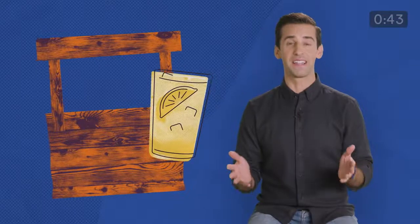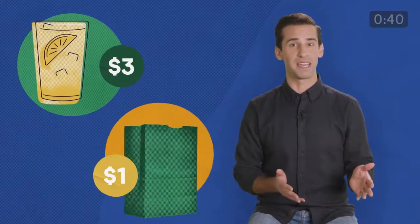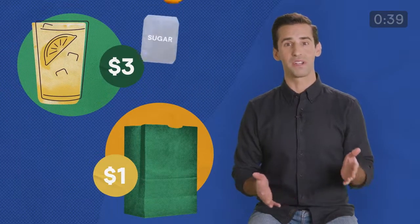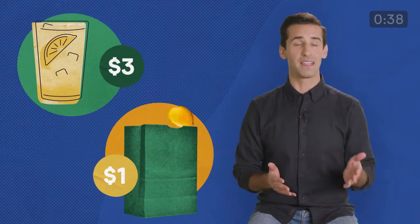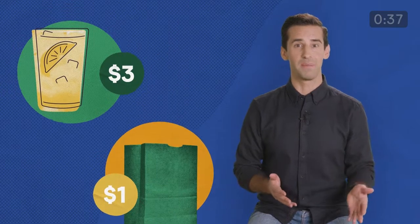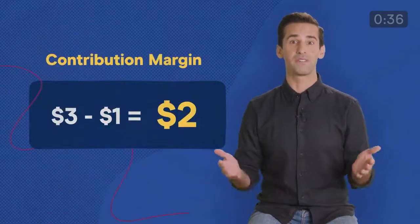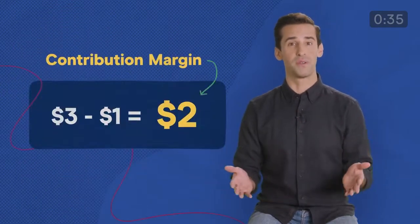If you run a lemonade stand and sell lemonade for $3 per cup and it costs you $1 to make each cup — which includes ingredients and the cost of the paper cup — then your contribution margin is $2.